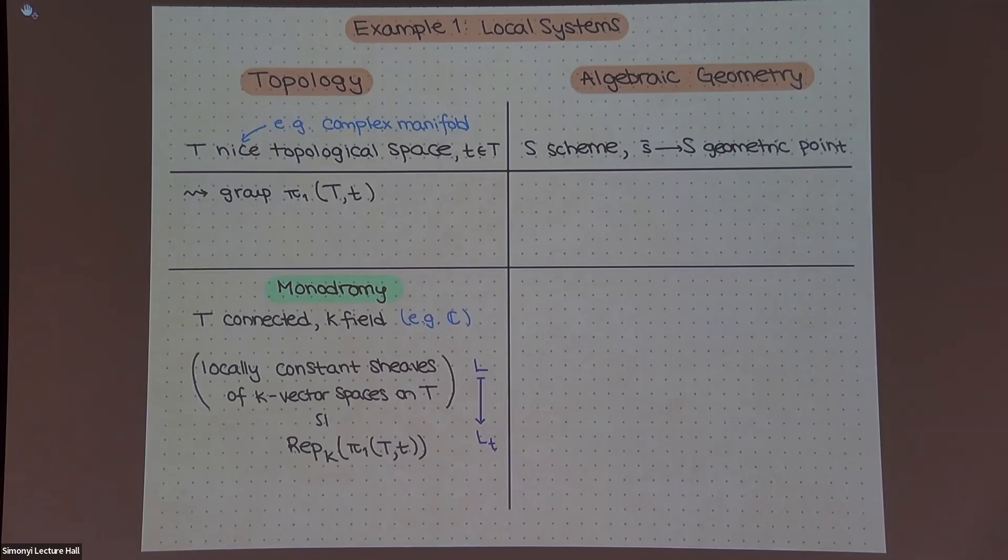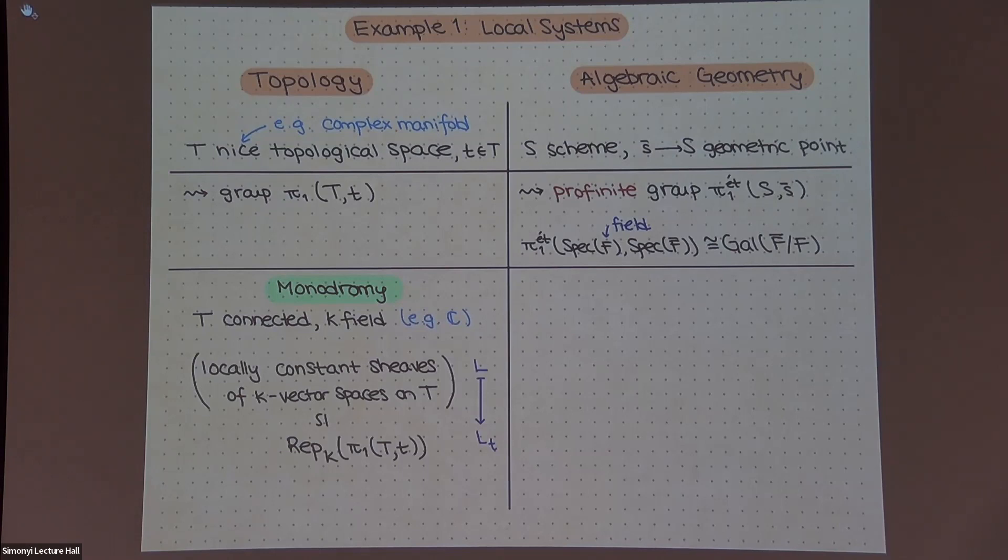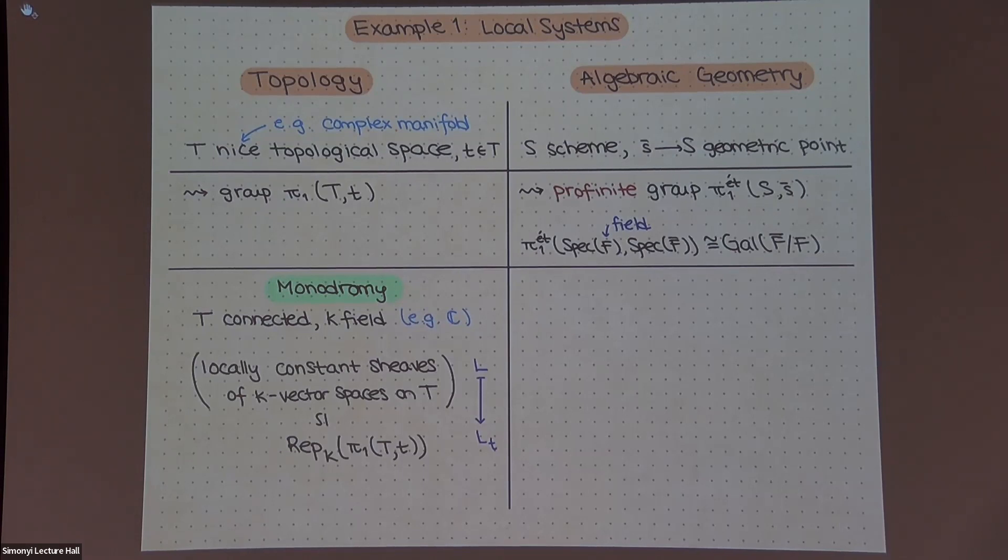But so in algebraic geometry, you have a scheme or variety, think of whatever is the nicest thing you'd like to think of. And there's a notion of point called a geometric point. And what this is, is just a choice of a separable closure of one of the residue fields of this. And attached to that, there is a profinite group called the étale fundamental group.